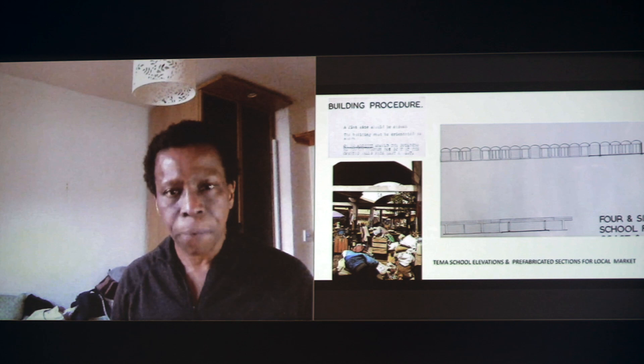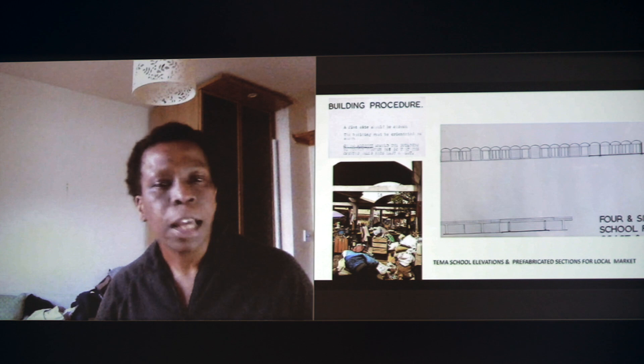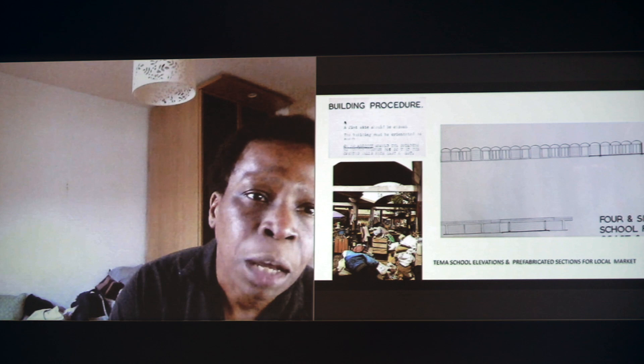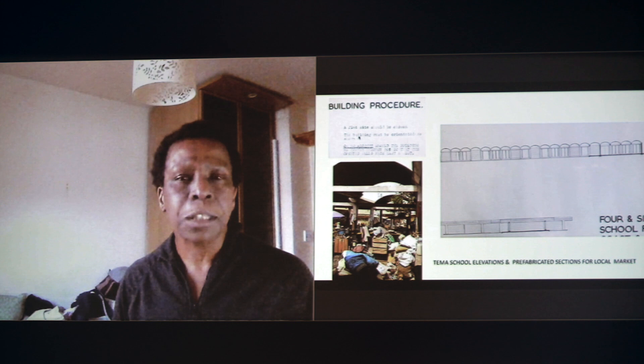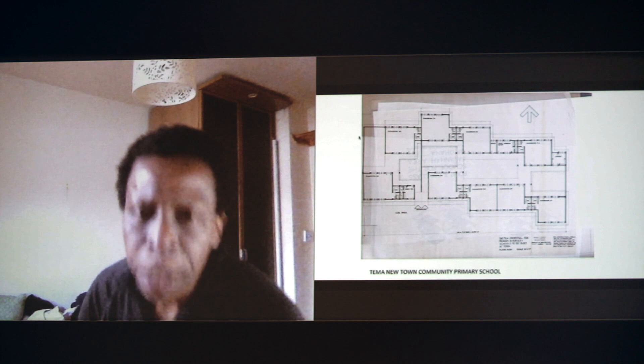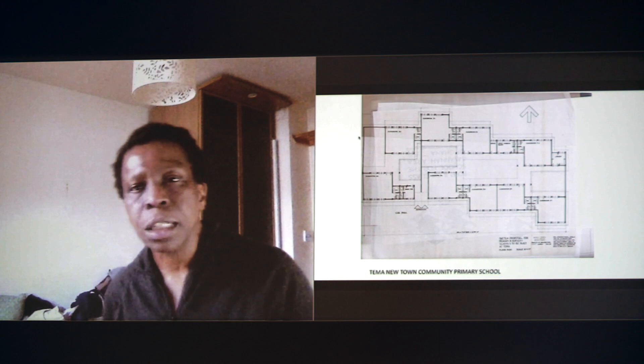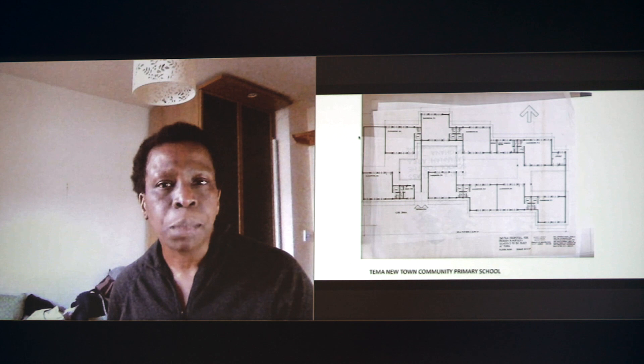The idea was very much about using prefabricated forms for various kinds of social infrastructure. This relates to environmental design principles of the time — the schools were designed to be properly cross-ventilated, using fast construction systems. Temer was a new town planned in the late 1950s and built in the 1960s. It had eight neighborhood communities, and each neighborhood community would have one of these schools.